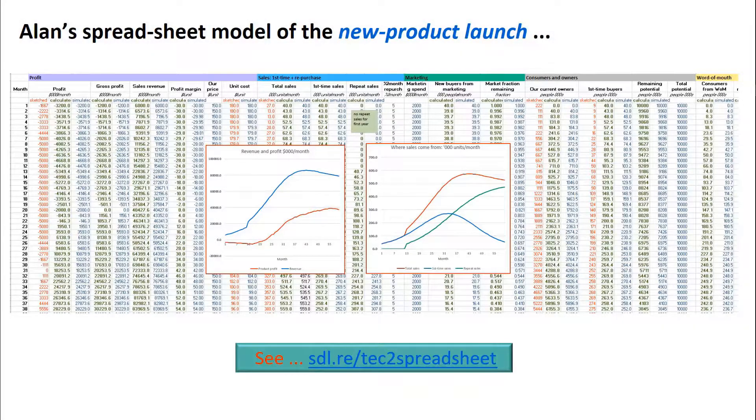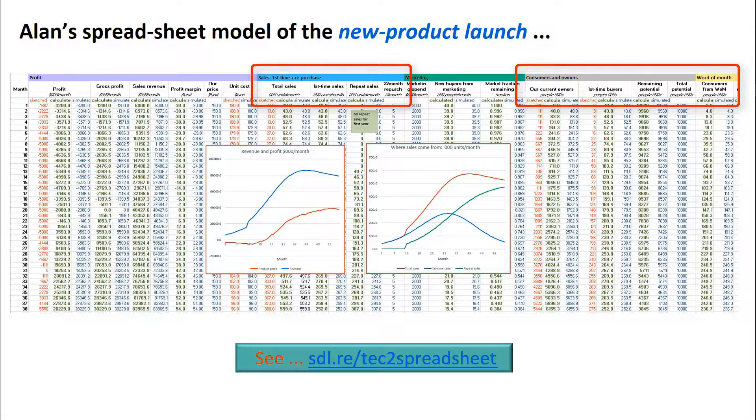This is a spreadsheet of that product launch. It's calculating the monthly results going down each column and working out profit on the left from the sales and cost items. I've dropped a couple of charts on here.